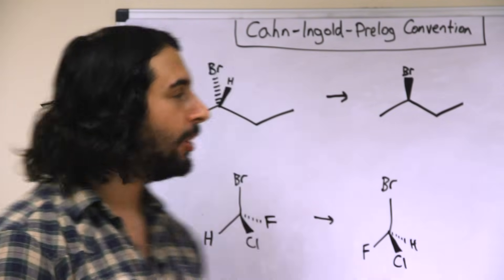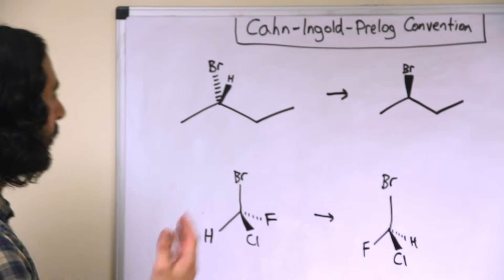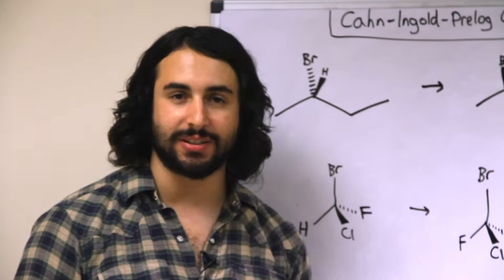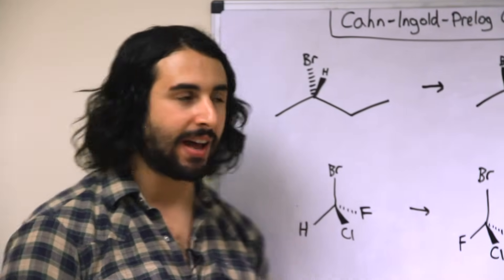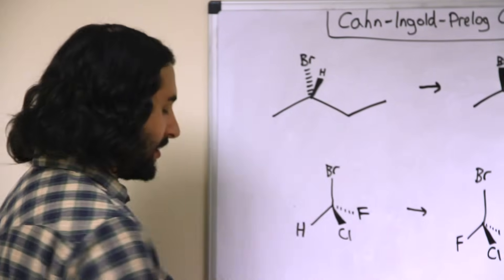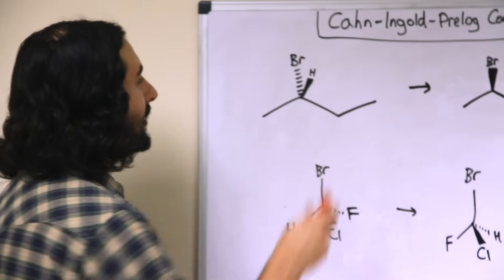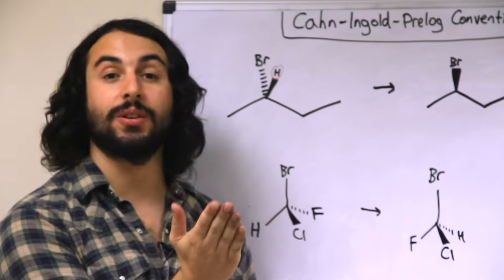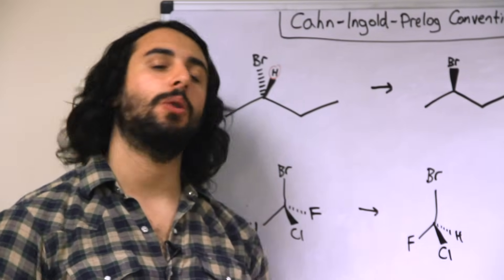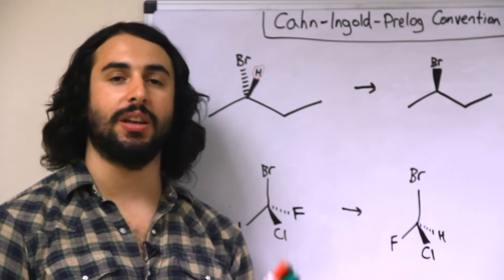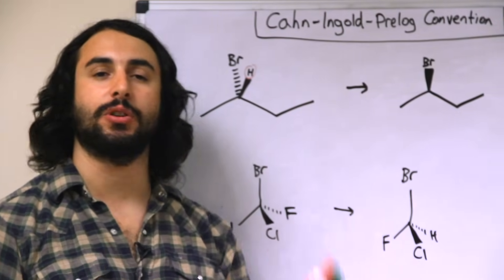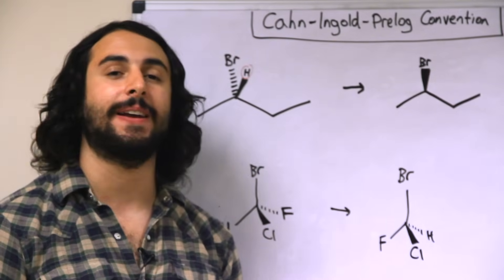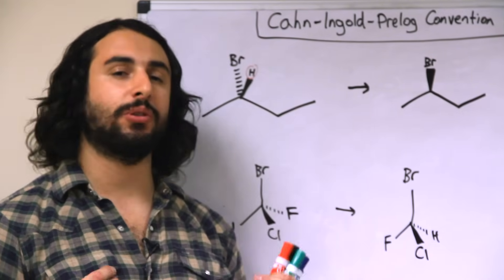Let's take a look at a couple of examples. For the first one, let's look at the opposite of the example we just looked at. This is a chiral center, but in this case the lowest priority group is towards us, so we are not in the privileged perspective to assign absolute configuration.